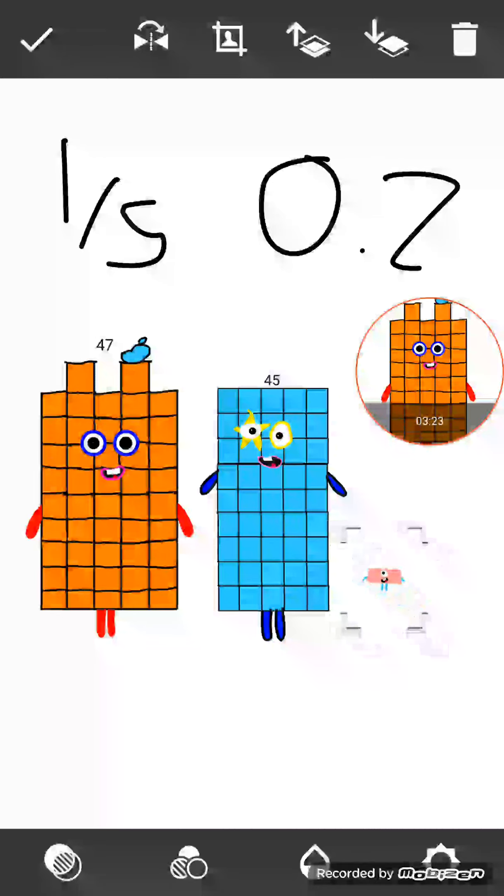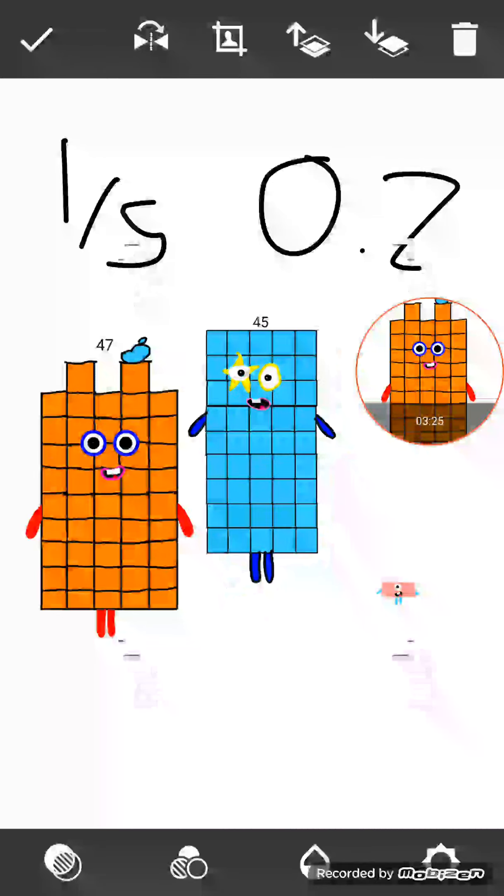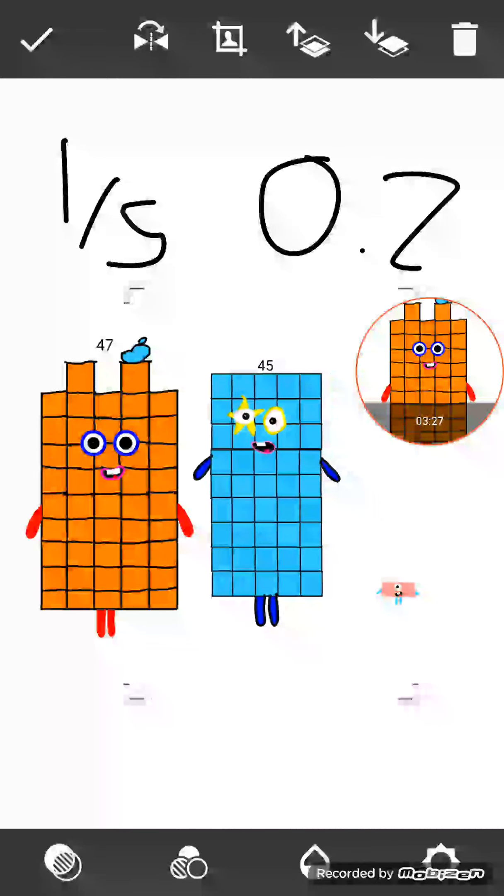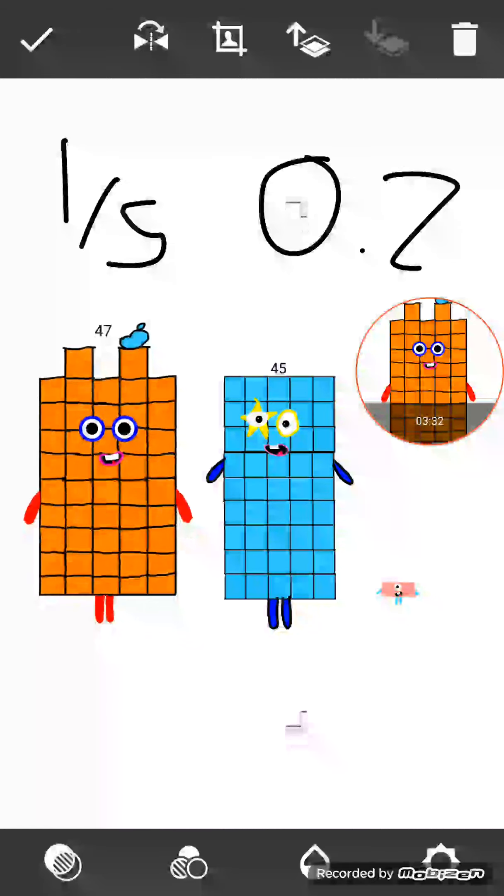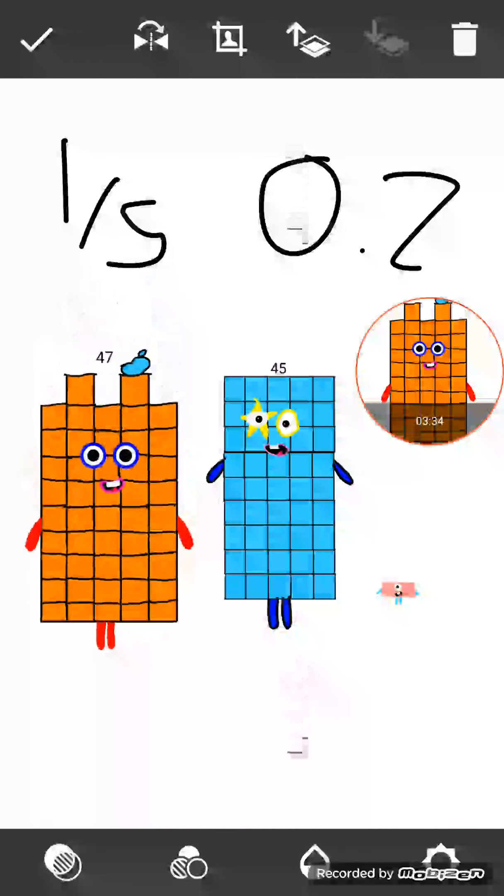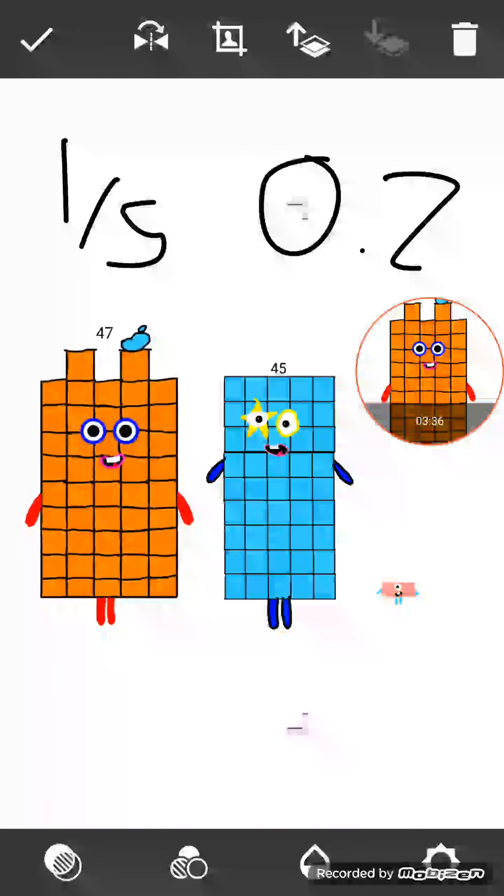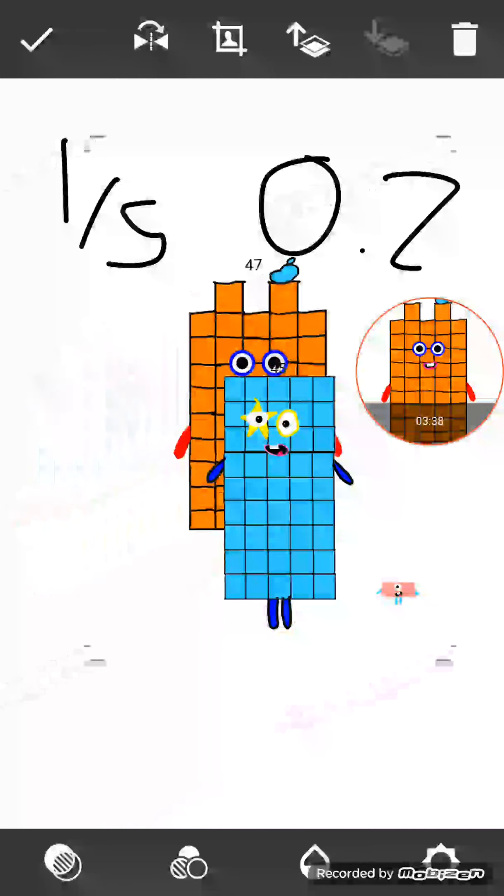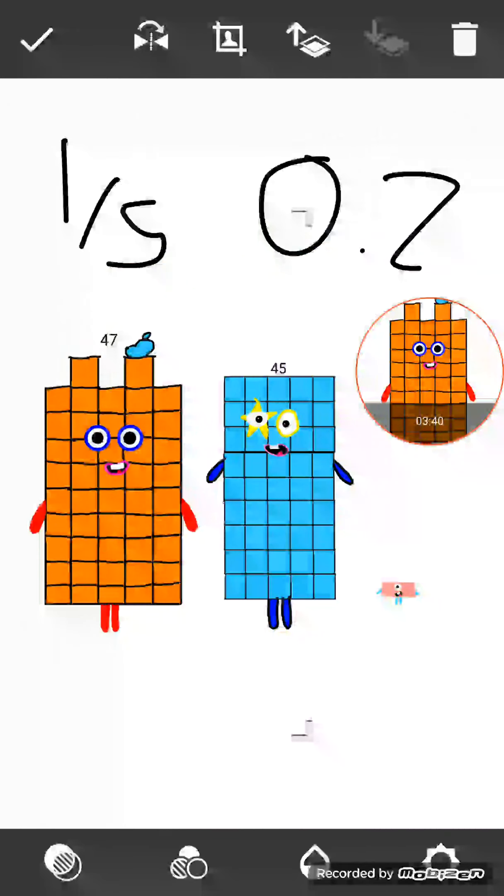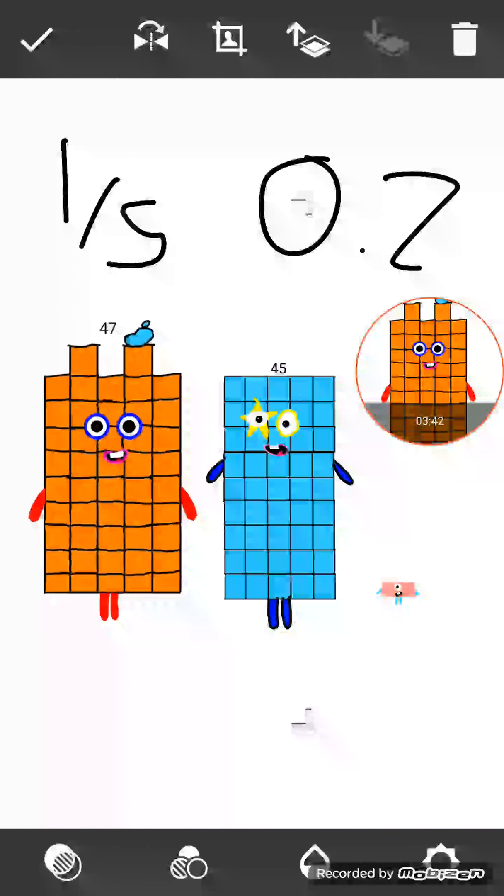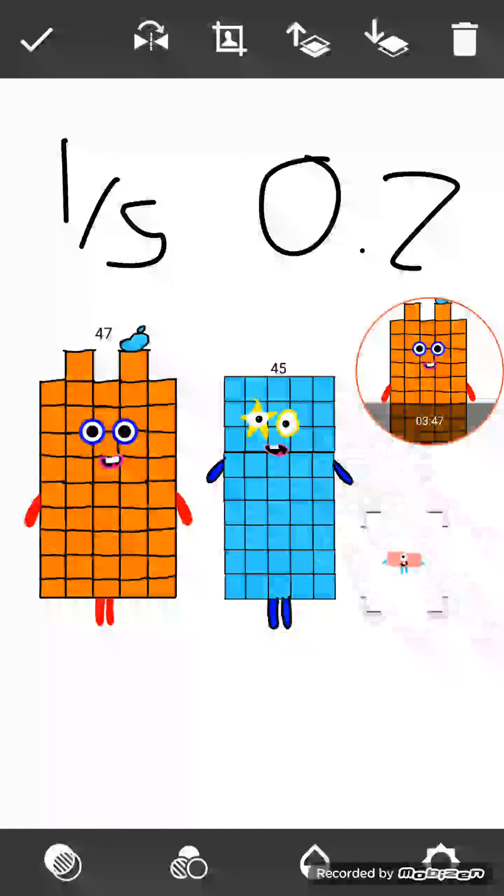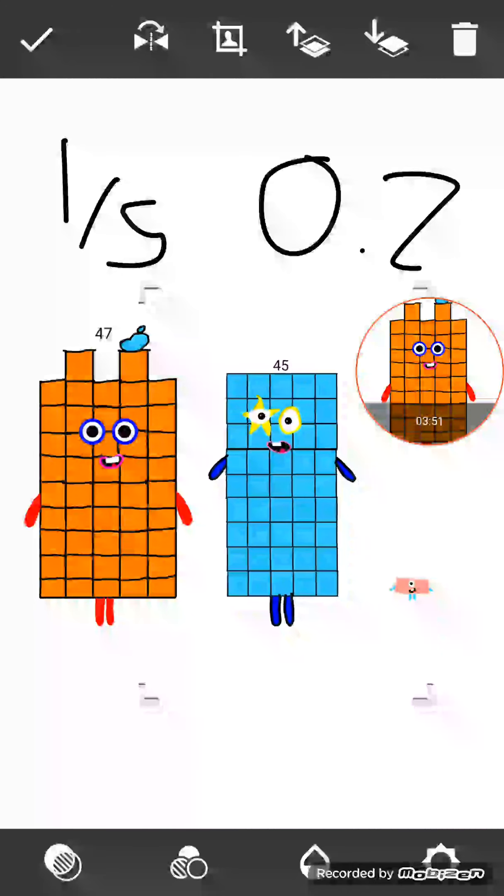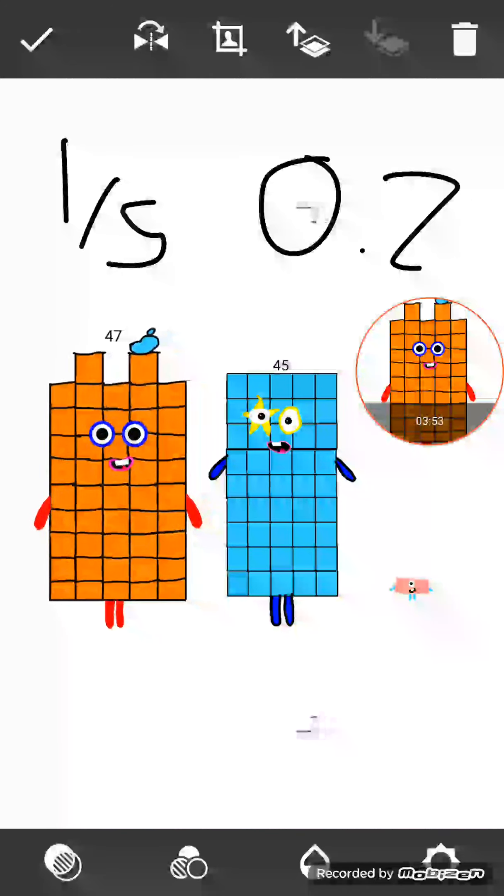Can you read that? A symbol of one-fifth and a number that says 0.2. A symbol that says one-fifth and a decimal number which says 0.2. And, Halfie, do you know what that equals? They both equal one-fifth. Yay! That's correct, Halfie.